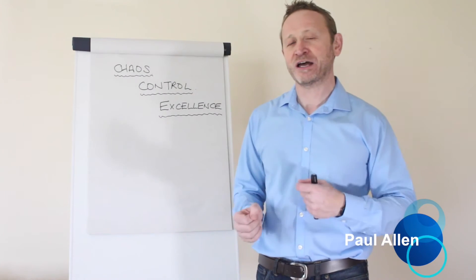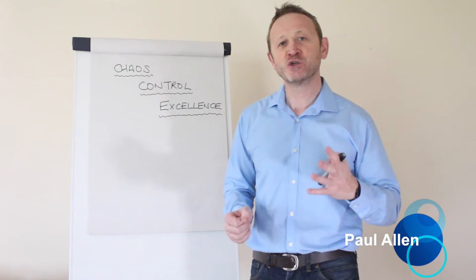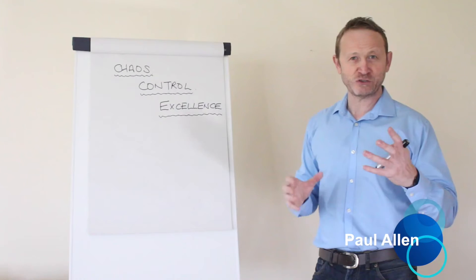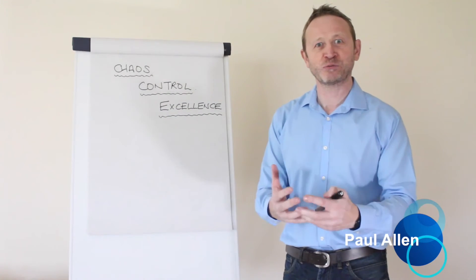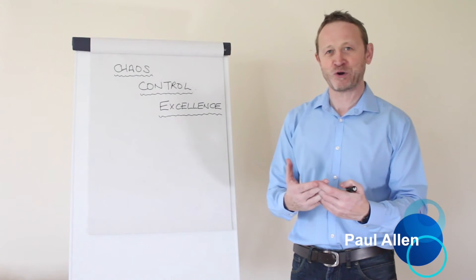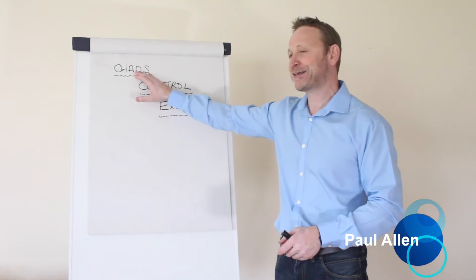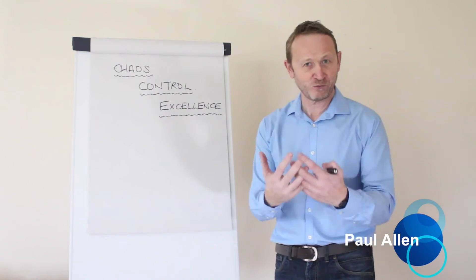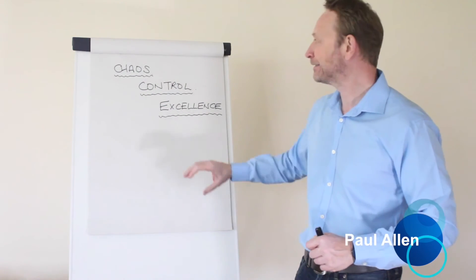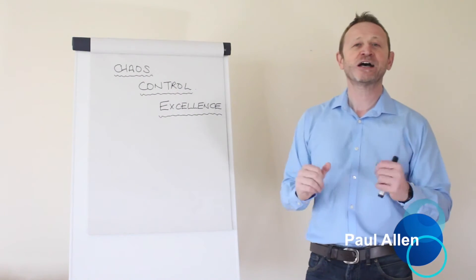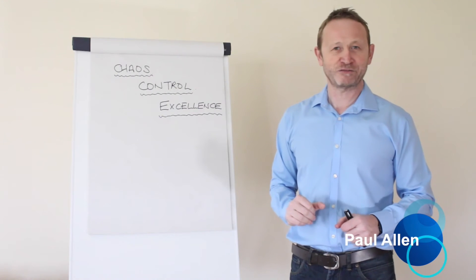And if you're doing a Six Sigma project, you need to know which state you're in so that you know which tools to apply and how to approach the problem. Essentially, chaos has its own unique way of fixing the problem. Control and excellence have their own unique way of fixing the problem.